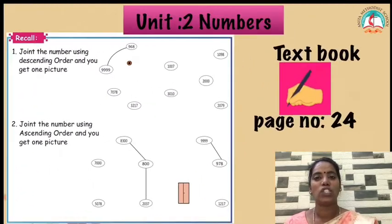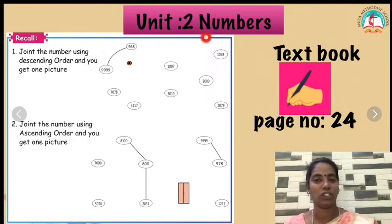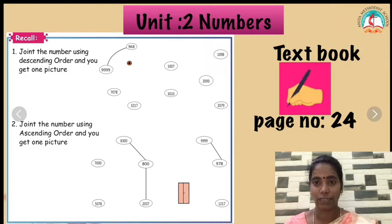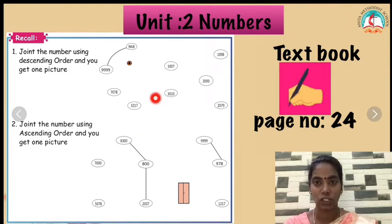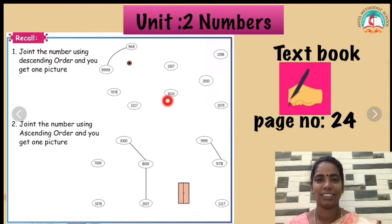Join the numbers using descending order and you get a picture. Children, shall we try together? Take page 24 in your textbook. Quickly take your pencil and then join it. What will you get? Quick — good.